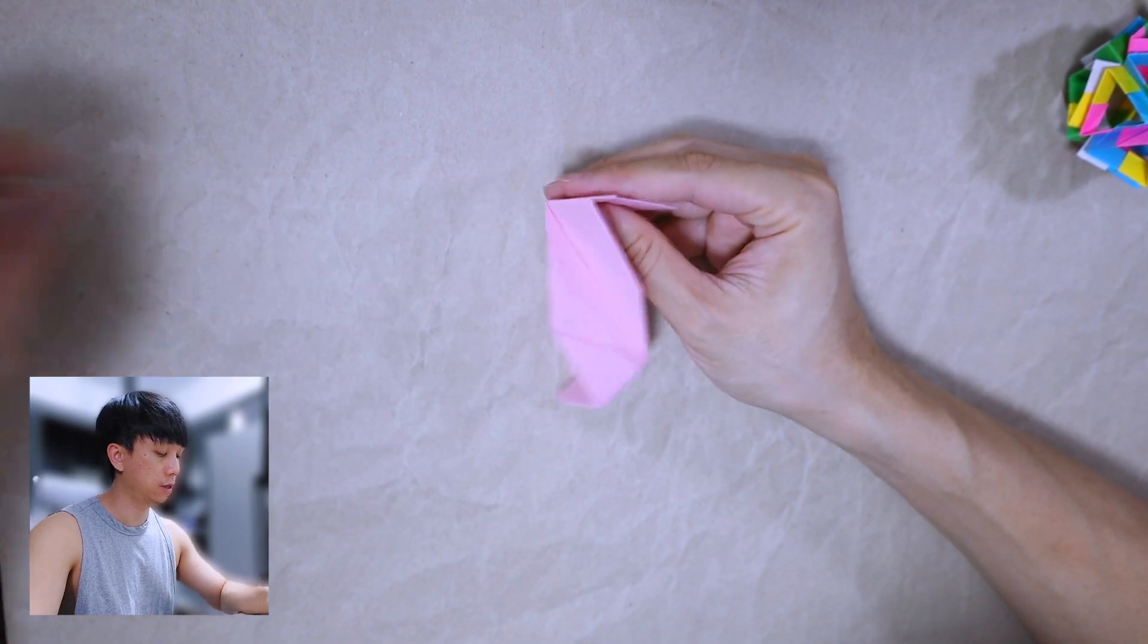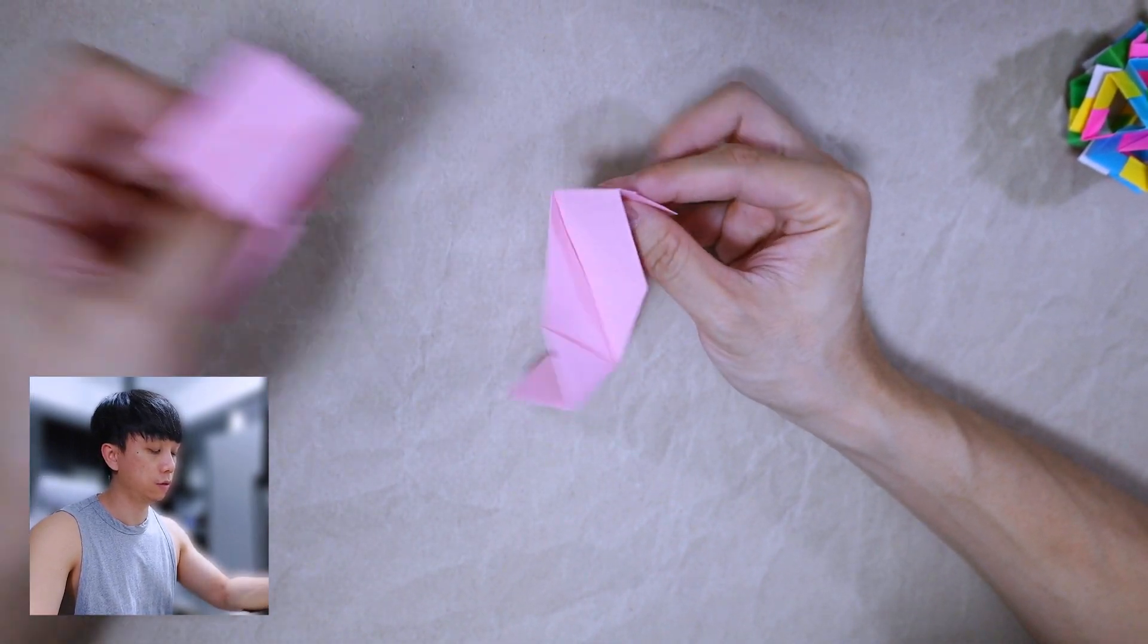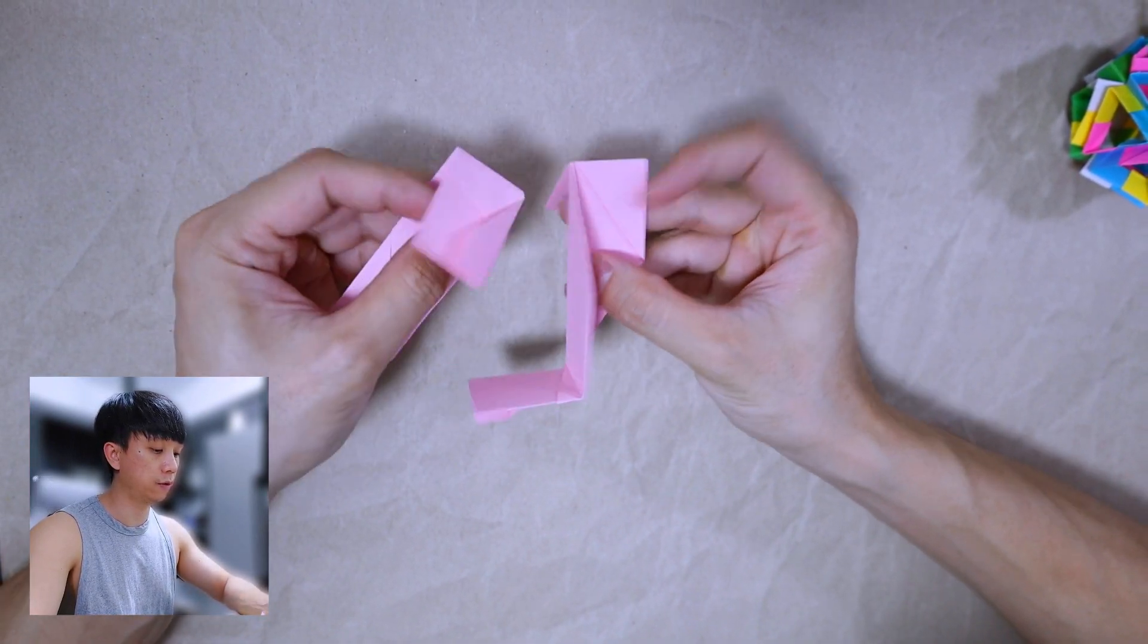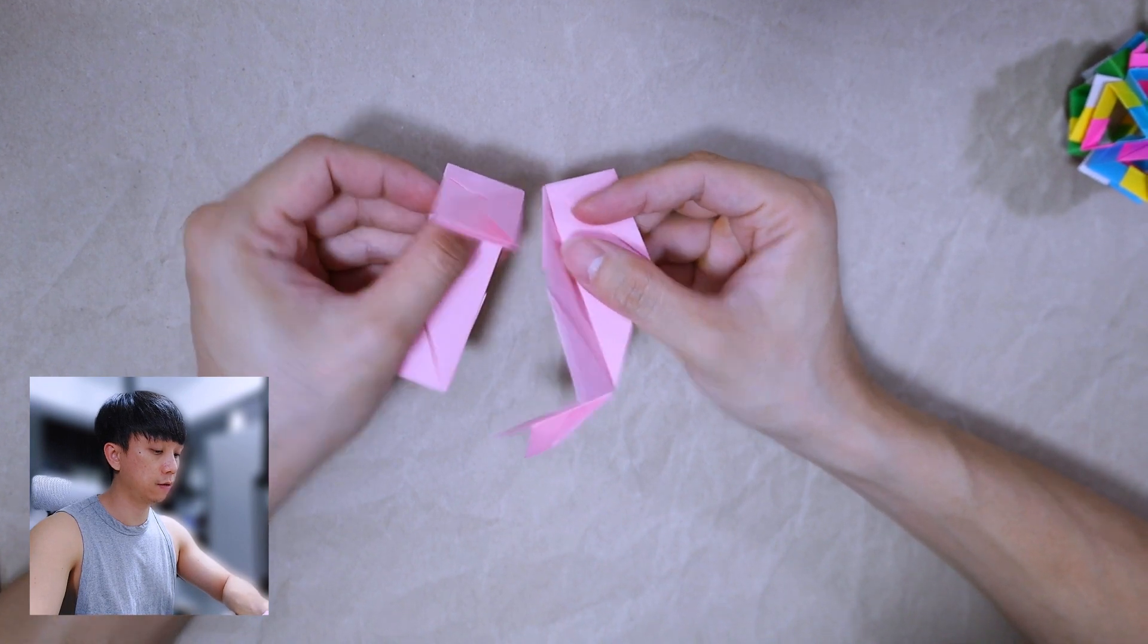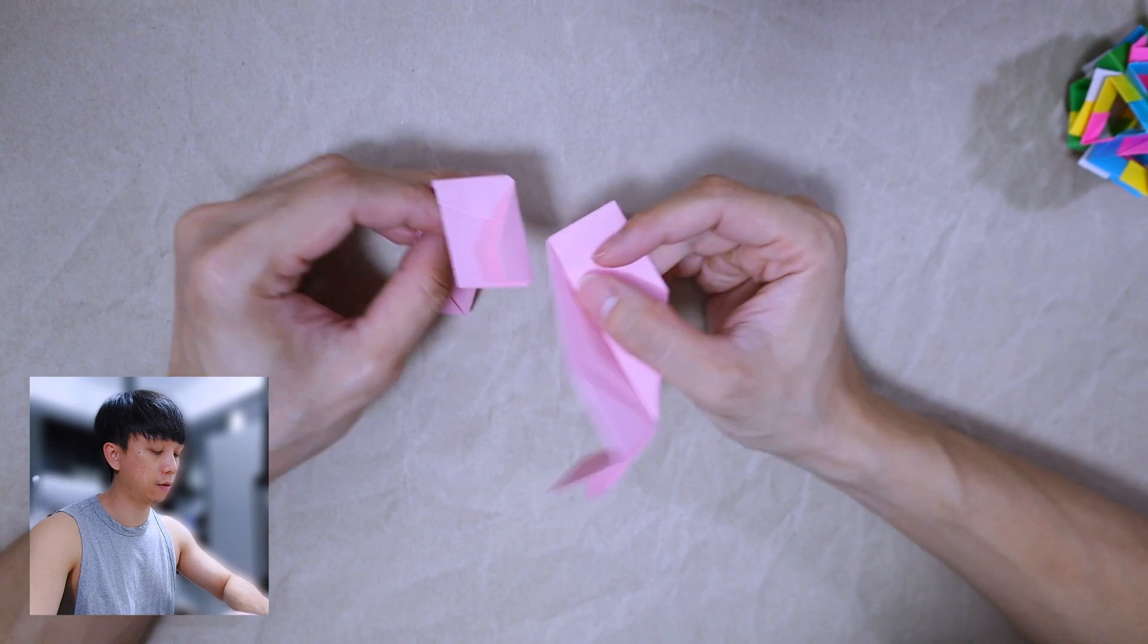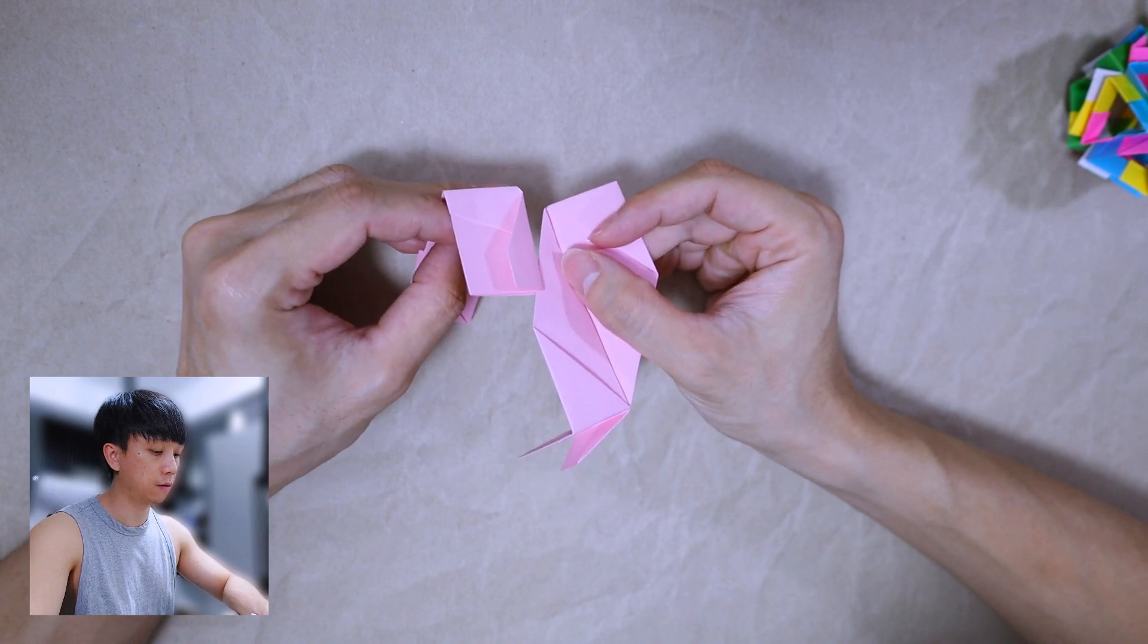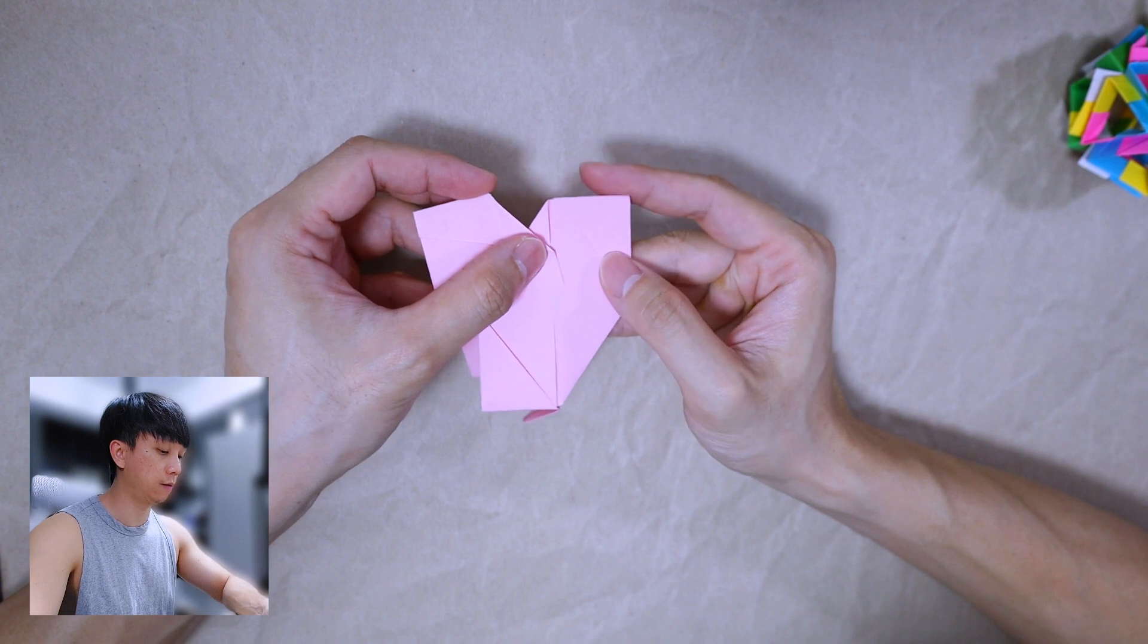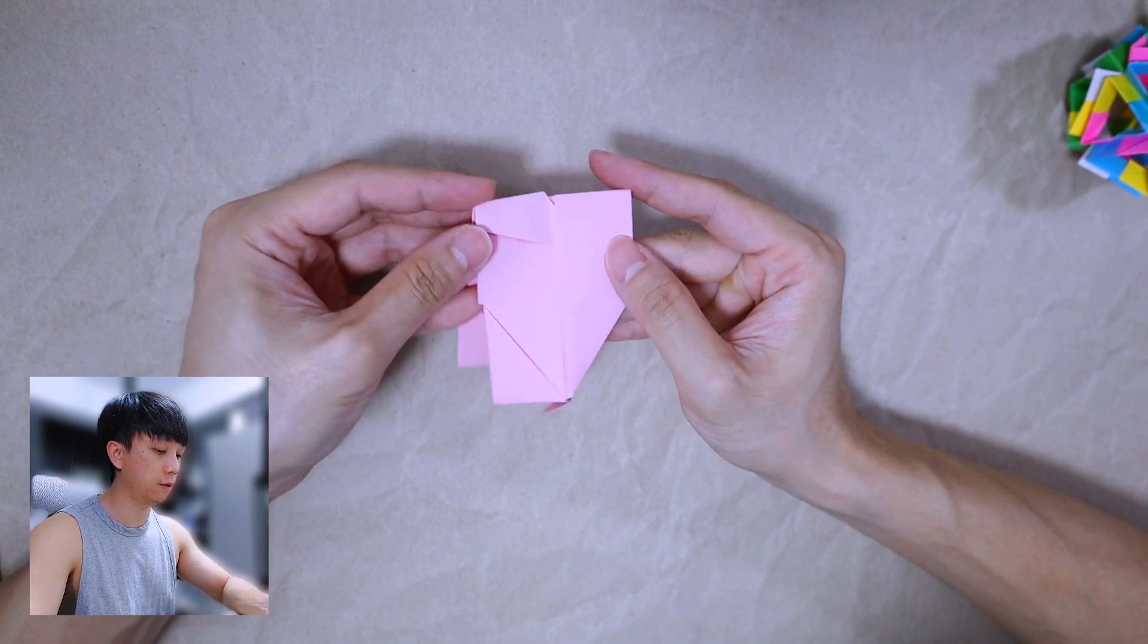To assemble, you just need to slip this part in this gap here. And this flap should be inserted in this pocket.